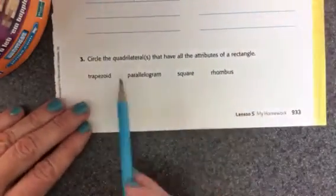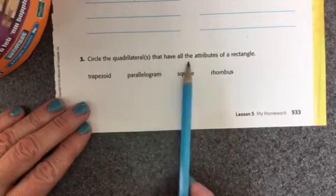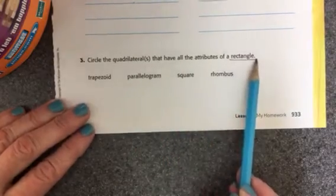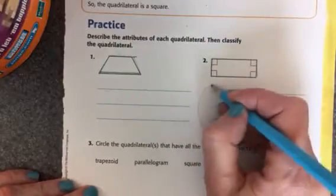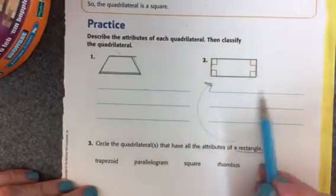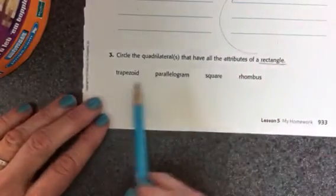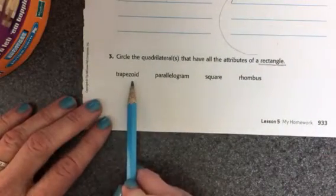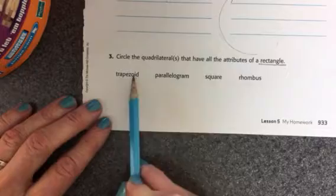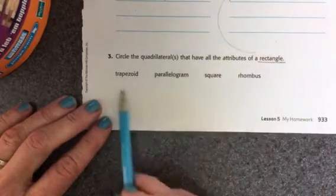Let's look at number three. Circle the quadrilaterals that have all the attributes of a rectangle. So we just barely did one that was a rectangle. So all of the attributes that are here, if this quadrilateral matches this, then you will circle it.